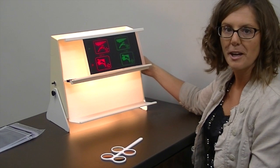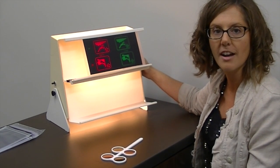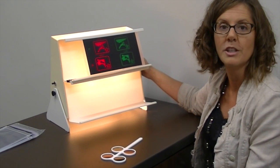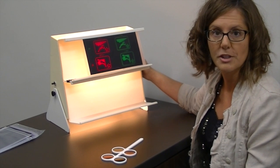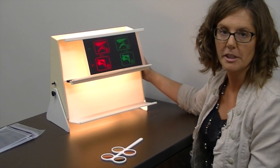This instrument is called a vectogram and it specifically works on how we align our eyes, either to converge which is to cross our eyes, or to uncross our eyes which is called divergence. That is a very important task that we should be able to do very easily.